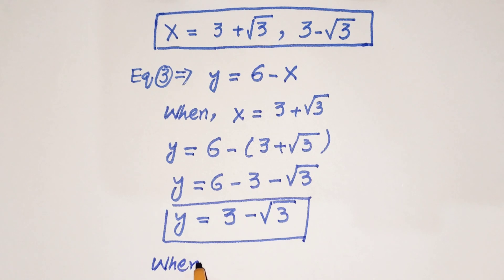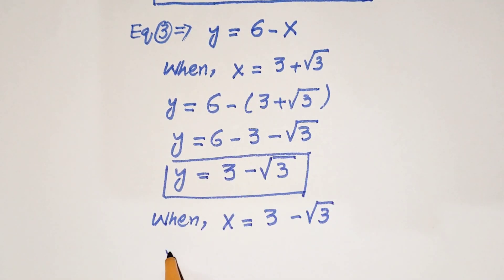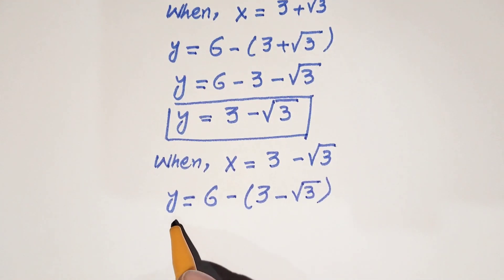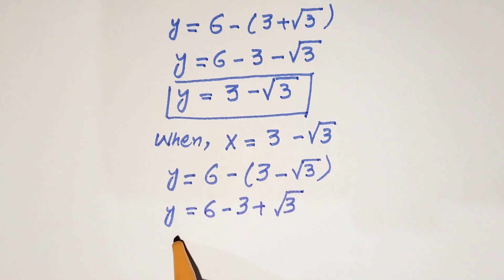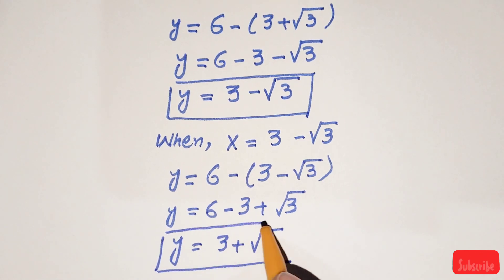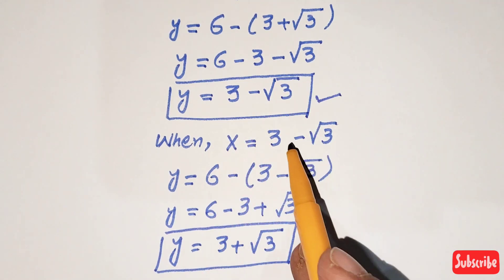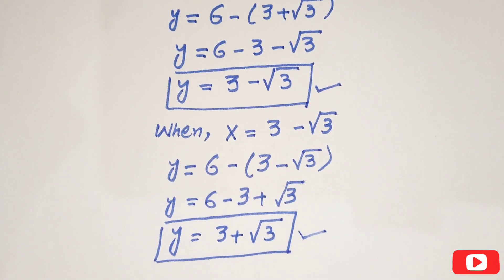Similarly, when x equals 3 minus root 3, substituting into equation 3 gives y equals 6 minus (3 minus root 3), so y equals 3 plus root 3. That is our second value of y. So when x equals 3 plus root 3, y equals 3 minus root 3, and when x equals 3 minus root 3, y equals 3 plus root 3.